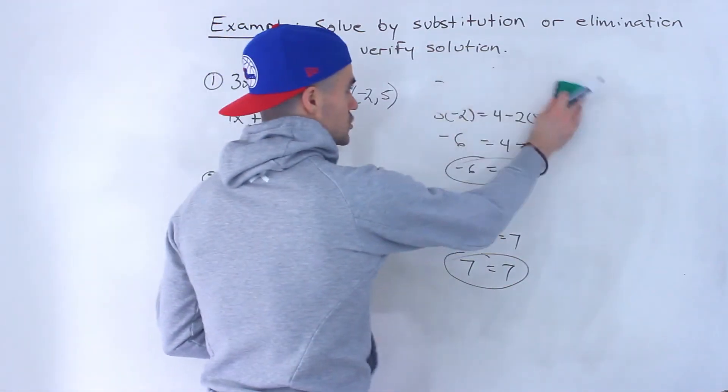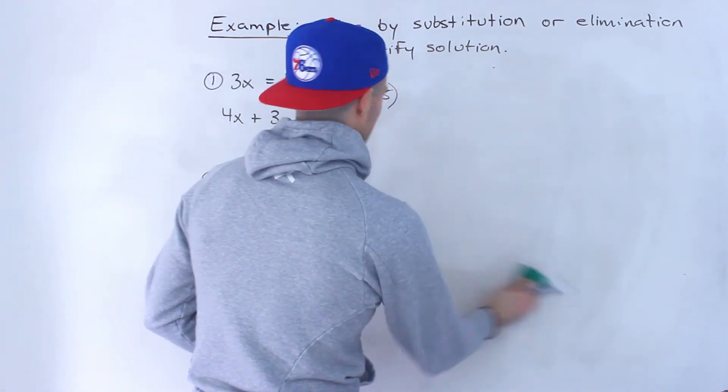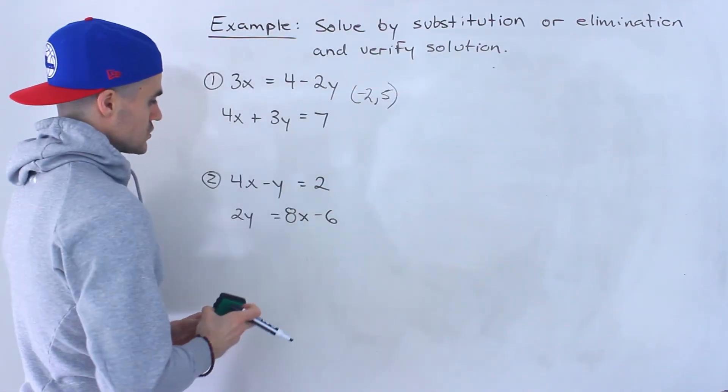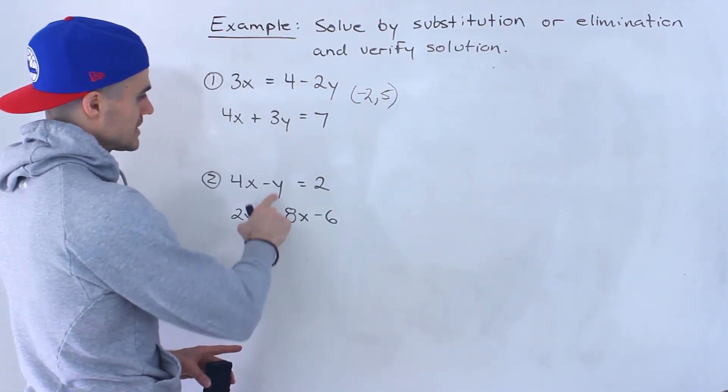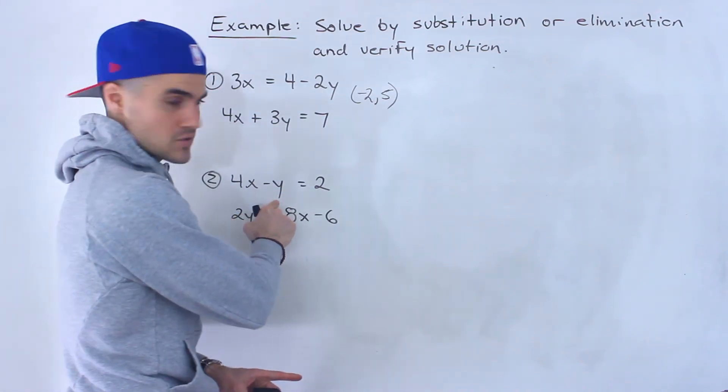Now what about number 2? So number 2, we got 4x minus y equals 2 and then 2y equals 8x minus 6. Notice here this y is by itself already so I'm going to do substitution.